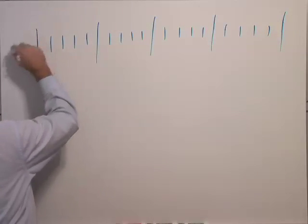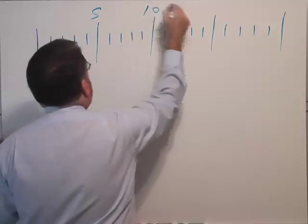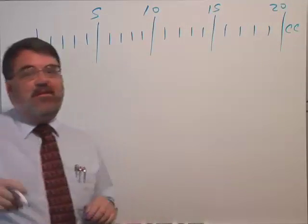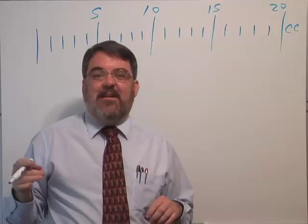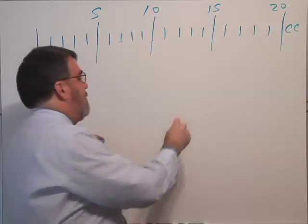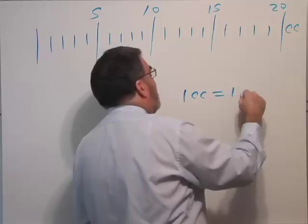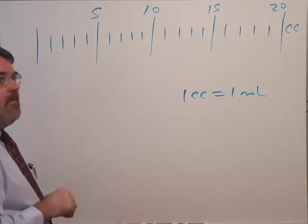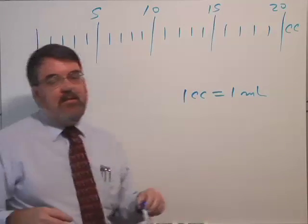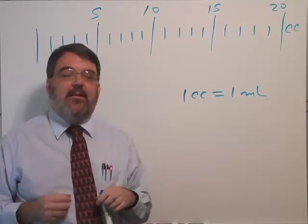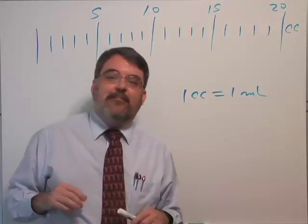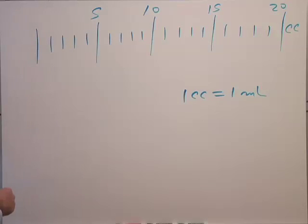And it's marked 5, 10, 15, 20, something like this. Now you're going to see CCs on syringes apparently. And I think CCs, remember the CC is the same as the ML, cubic centimeter, milliliter, they're the same. But I think you tend to see CCs in terms of syringes. And you'll see MLs in terms of things you pour out of a bottle or a vial. But they really are the same.